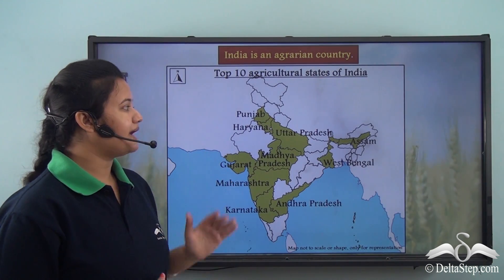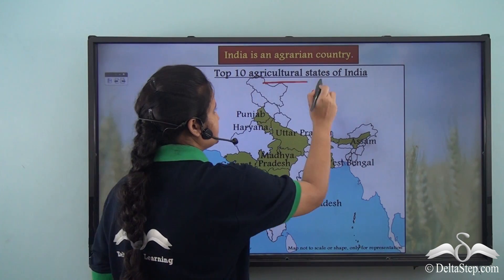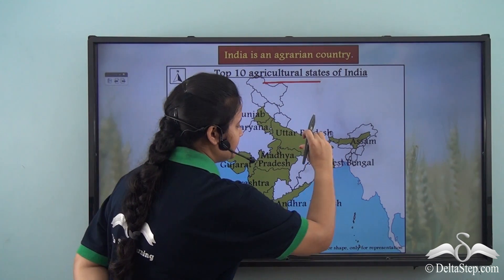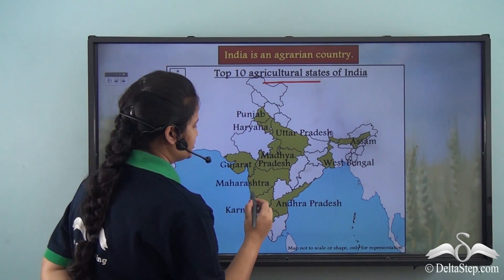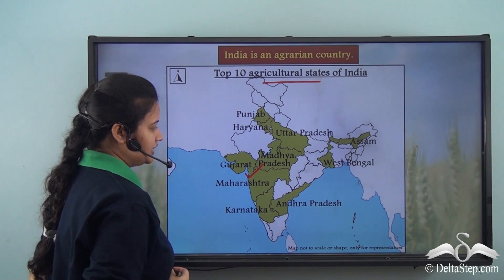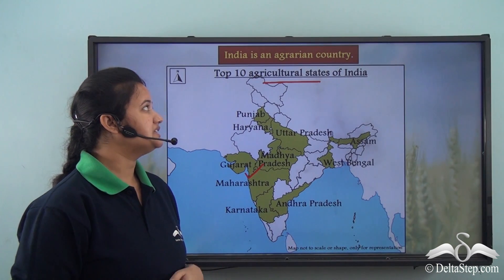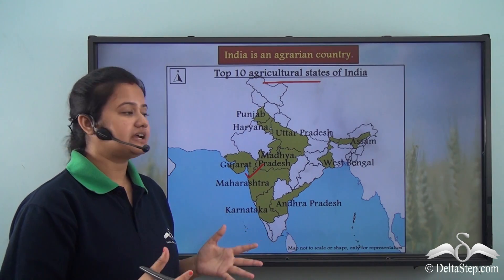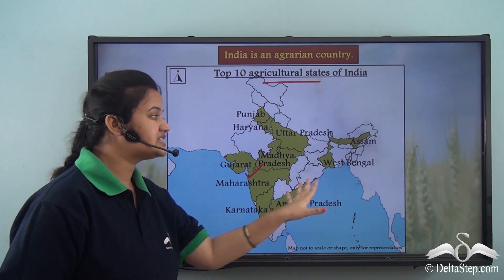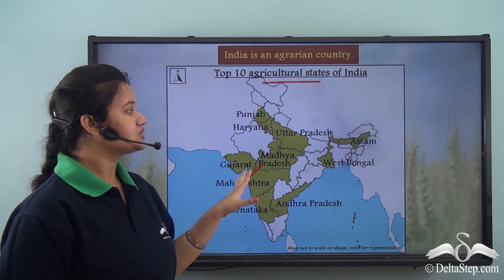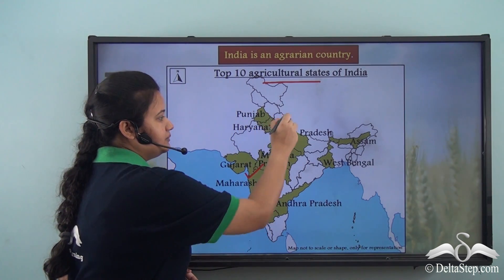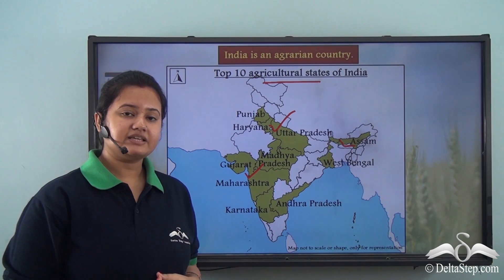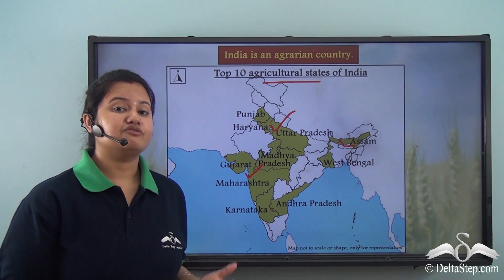Looking at a map of India showing the top agricultural states, we find that mostly the states in the northern plains, the northeastern parts, and the southern states have a major portion involved in agriculture. However, agriculture is not practiced equally in every state — it is concentrated in the northern plains, the northeastern parts, and the southern portion of India. This is because agriculture depends on several factors.